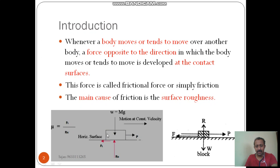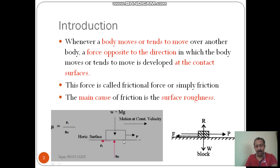Here is the body kept on a horizontal plane. The weight of the body, Mg or W, will act vertically downward always, and there is a normal reaction which is always perpendicular to the contact surface. If we are applying a force parallel to the surface towards the right, the tendency to move the body will be towards the right. At the contact point of the body and the surface, a force will develop in the opposite direction to the tendency to move or motion of the body. That force is called frictional force. The main reason for friction is roughness of the surface.